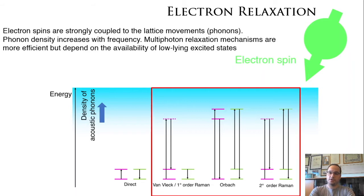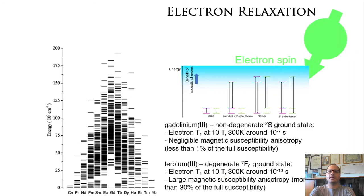A brilliant example of this is the case of lanthanoids. If you take gadolinium and terbium, which are next-door neighbors, gadolinium has a non-degenerate 8S ground state, and you see that there is a huge gap between the first excited level and the ground state, and nothing in the thermally accessible range.